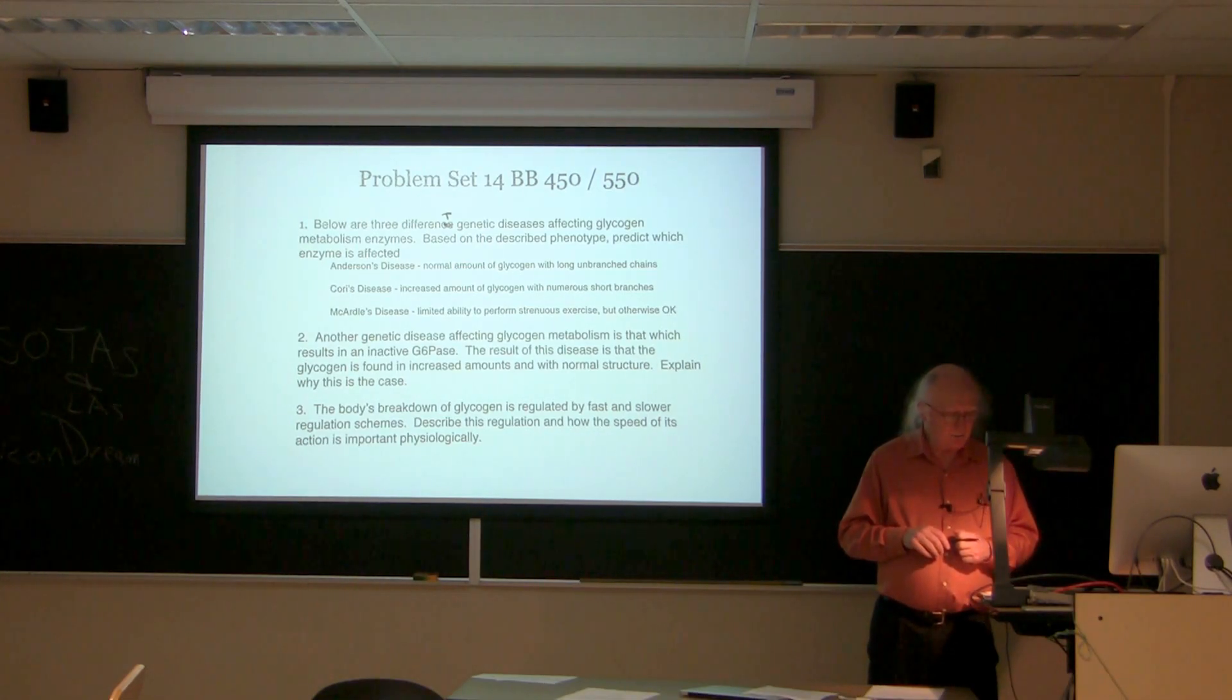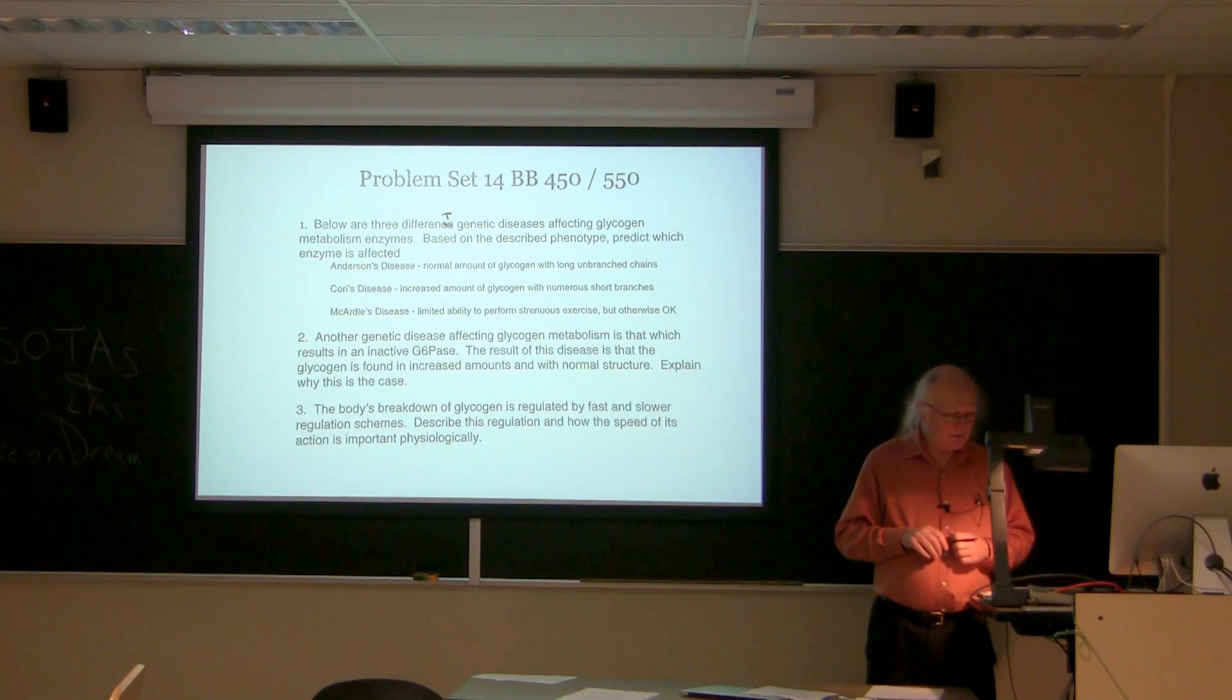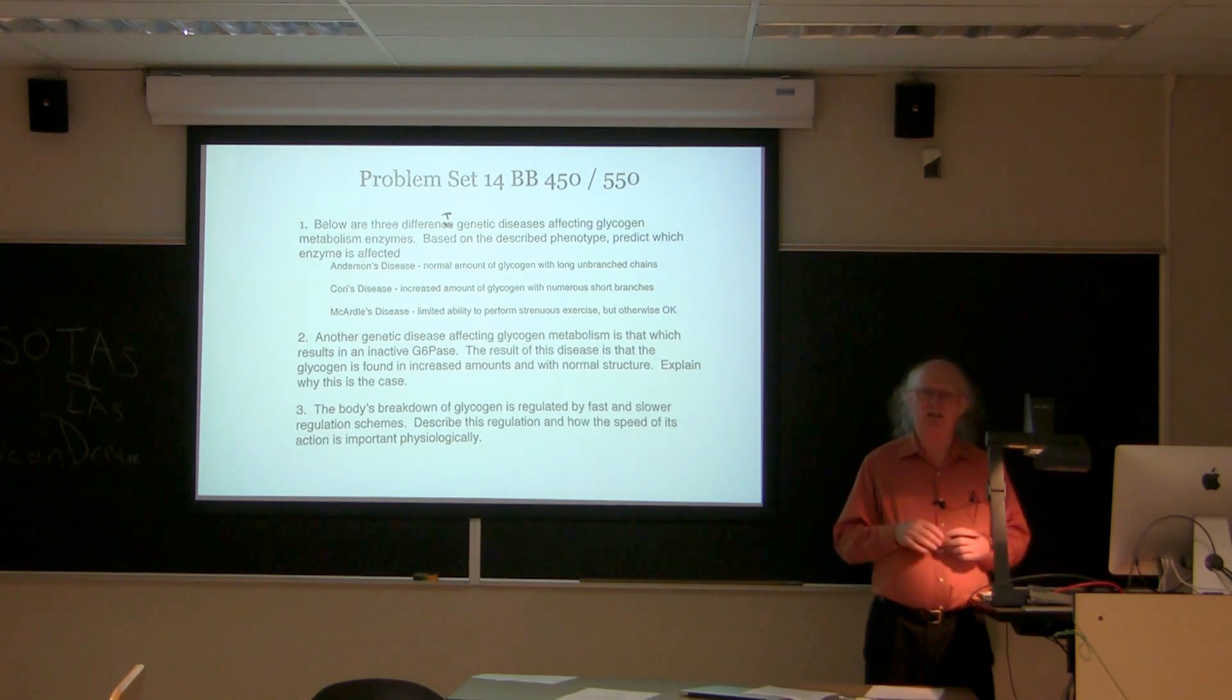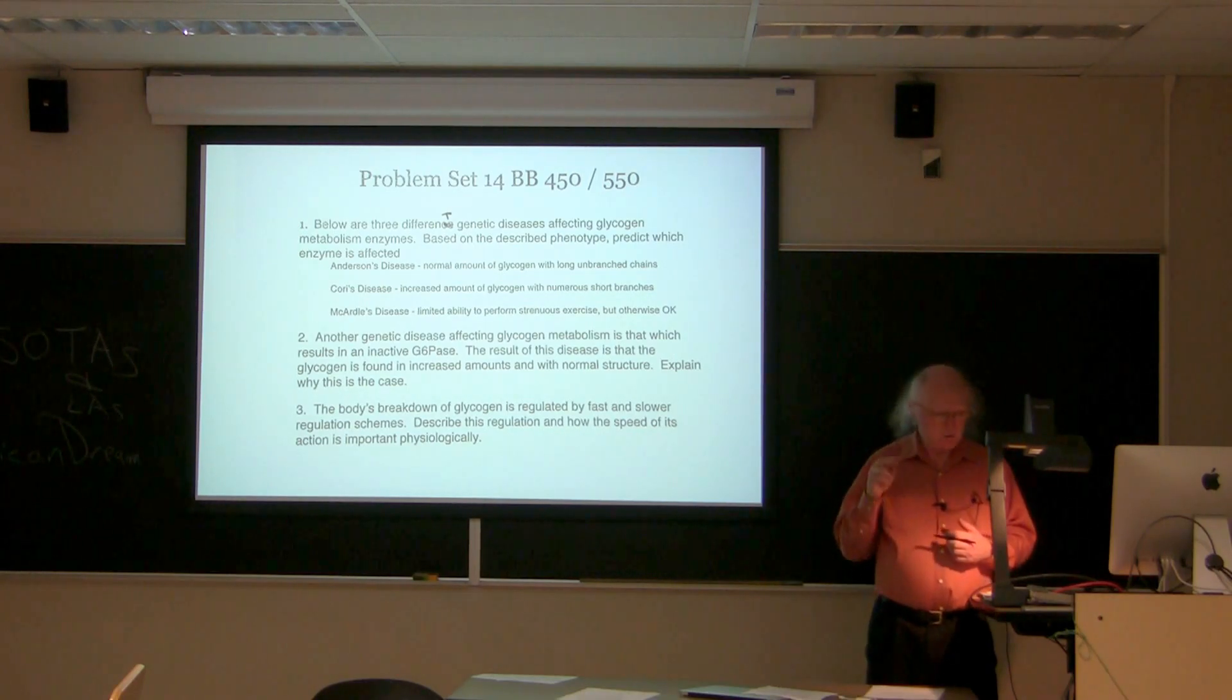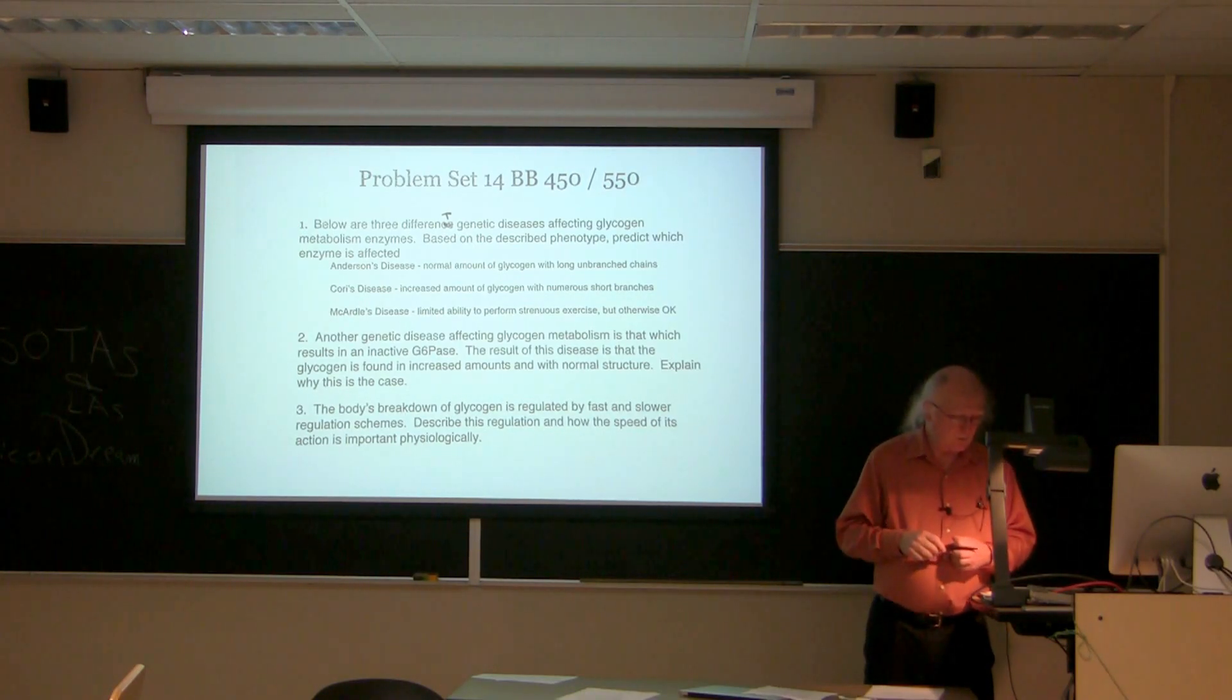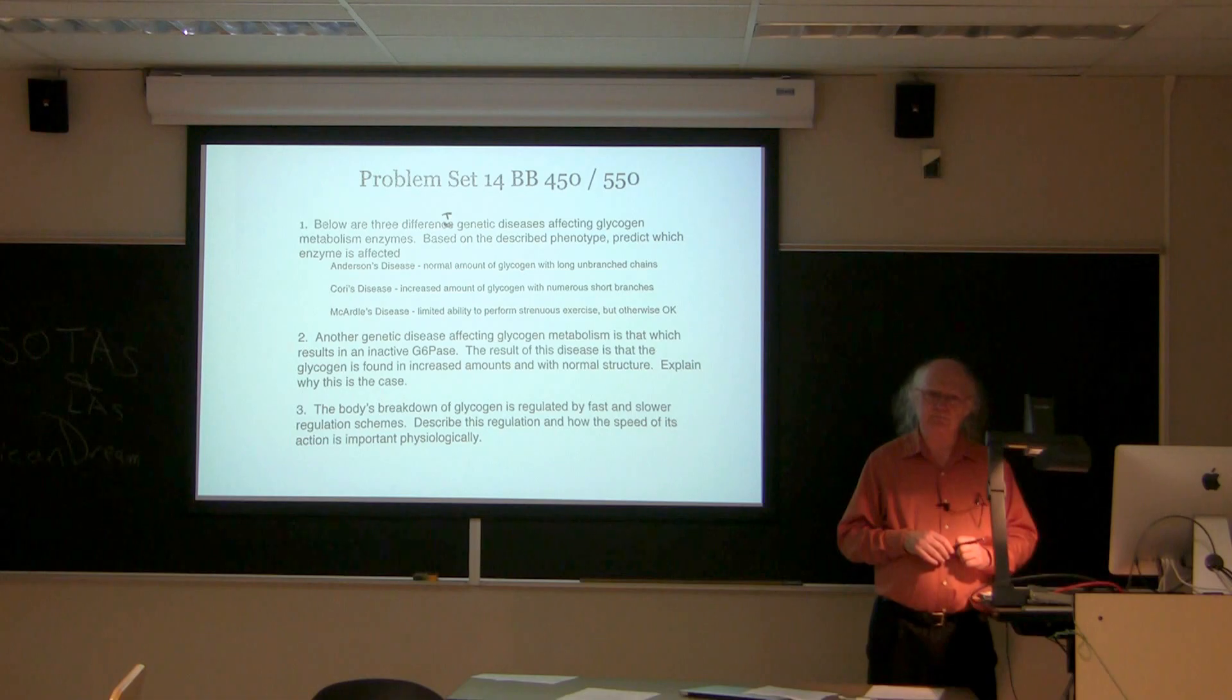The last question says that the body's breakdown of glycogen is regulated by fast and slower regulation schemes. Describe this regulation and how the speed of its action is important physiologically. Now, I've talked about this in class and I'll repeat it here. When we think about glycogen metabolism regulation, we think about two schemes and specifically here we're only talking about the breakdown of glycogen. The synthesis of glycogen is also tightly regulated but that's not what the question is asking about.